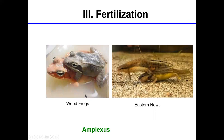Here are some examples of amplexus. The wood frog demonstrates inguinal amplexus, where the male has his front legs around the upper waist of the female underneath her arms. Looking at our eastern newt, we have cephalic amplexus, where the male takes his hind legs and wraps them around the female's head.